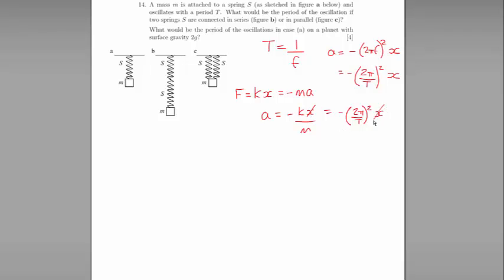Now we can cancel the x's from each side. Let's multiply both sides by minus 1 to lose the minus sign and take the square root of each side, so we're left with the square root of k divided by m is equal to 2π divided by t. We can take the reciprocal of both sides to give us the square root of m divided by k equals t divided by 2π, so finally t equals 2π times the square root of m divided by k.